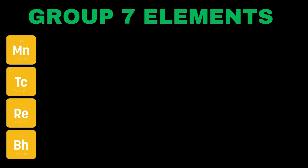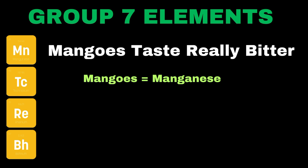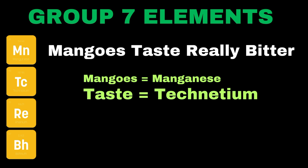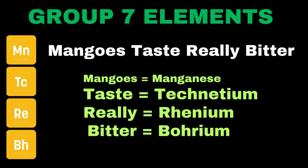Now it's time to move towards group 7 elements. The mnemonic to memorize them is: 'Mangos taste really bitter.' Here 'mangos' refers to manganese, 'taste' refers to technetium, 'really' denotes rhenium, and 'bitter' denotes bohrium.